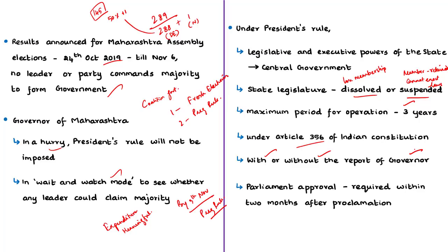The proclamation can be made by the President on receipt of a report from the governor of a state, or even without a report from the governor. Once the rule is proclaimed, both houses of Parliament — Lok Sabha and Rajya Sabha — have to approve it within two months from the date of proclamation. Once approved, president's rule continues for six months, and can be extended by Parliament for subsequent periods of six months. Whatever the case, it can be extended until the total period reaches three years, after which president's rule must end and normal constitutional machinery must be restored.